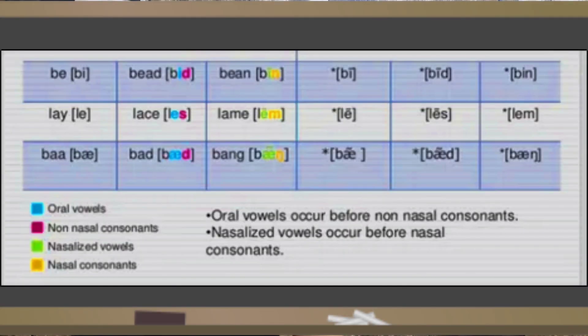As an illustration of allophones, consider vowel nasalization in English. Vowels become nasalized when followed by nasals. Sounds in blue are oral vowels, sounds in violet are non-nasal consonants, sounds in green are nasalized vowels, and sounds in orange are nasal consonants. For example: Bee, Bid, Bin; Lay, Lace, Lame.